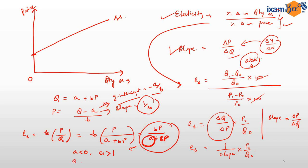Similarly, if A is greater than 0, the y-intercept will be a negative number, and the supply curve will cut the horizontal axis. For that supply curve, elasticity will be less than 1, because the denominator is greater than the numerator. And if A equals 0, there is no intercept term — the curve originates from the origin — and both numerator and denominator become equal (BP = BP), so elasticity of supply equals 1.